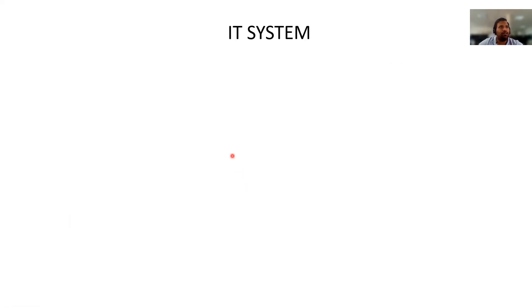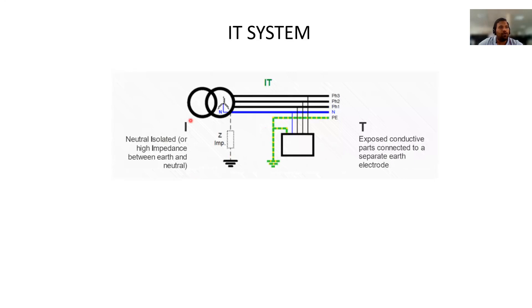The IT system: in this system, the neutral is isolated — it is not grounded. In some cases, the neutral is connected to earth through a high impedance. The load-side equipment is grounded. This type of system is called the IT system.